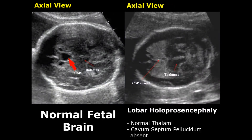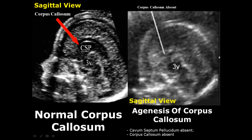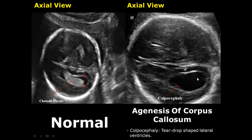Lobar holoprosencephaly is the least severe form — in this, the thalami are normal but the cavum septum pellucidum is absent. In agenesis of the corpus callosum, the corpus callosum which divides the cerebral hemispheres is absent, and the cavum septum pellucidum is also absent. One classic sign is colpocephaly — a teardrop-shaped lateral ventricle configuration in which the ventricles are dilated and have a teardrop shape, different from other types of ventriculomegaly.